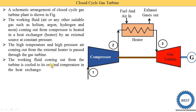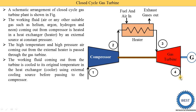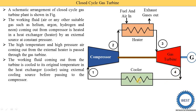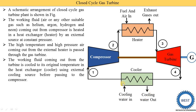The working fluid coming out from the turbine is cooled to its original temperature in the heat exchanger called the cooler, using an external cooling source, before passing to the compressor. The exhaust coming out from the gas turbine at point 4 is connected with this cooler. To reduce the temperature of the working fluid, cooling water is supplied to the cooler. The working fluid passes inside the tubes and cooling water is outside; the cooling water absorbs heat energy from the working fluid, reducing its temperature before it is supplied to the compressor.